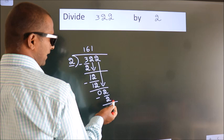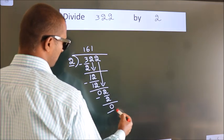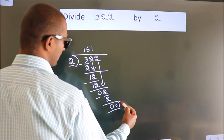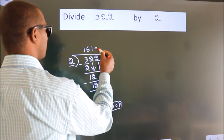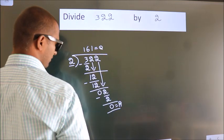No more numbers to bring it down. So we stop here. This is our remainder. This is our quotient.